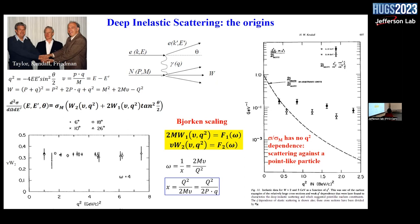We seemed to be back to hitting something point-like. This was the hint that the proton had actual point-like constituents inside it. This is shown in another plot: the structure function W2 displayed no dependence on the momentum transfer. This was all expressed by the hypothesis of Bjorken scaling — the cross-section does not depend on ν and Q² independently, but on only one variable: ω, also expressed as 1/x, defined as the ratio of 2 times the proton mass times the energy transfer, divided by Q².